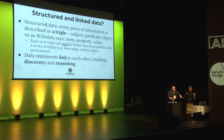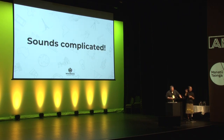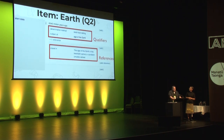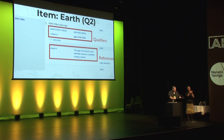These data statements link to each other. This enables the great power — the discovery, the reusability, reasoning about the data, and interoperating data. This is what it looks like on Wikidata: the Earth is an instance of a terrestrial planet. Here is a more sophisticated piece of data — its start date is 4,550 million years ago. How do you know? This number comes with the determination method: lead-lead dating. And it is stated in a scholarly article by an American geologist.